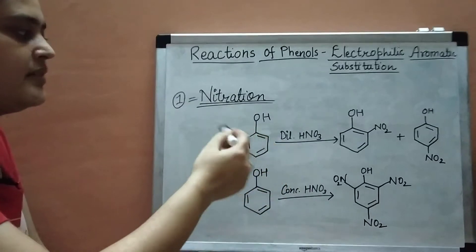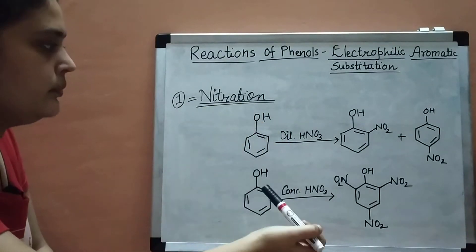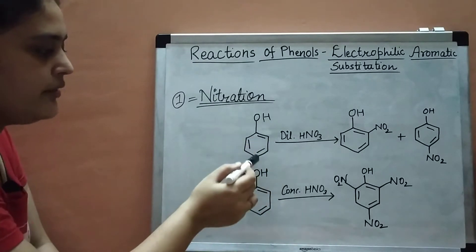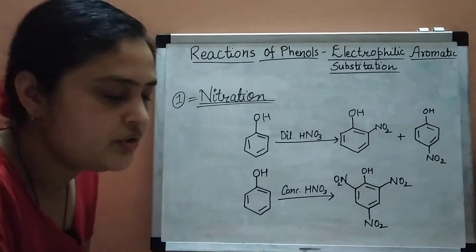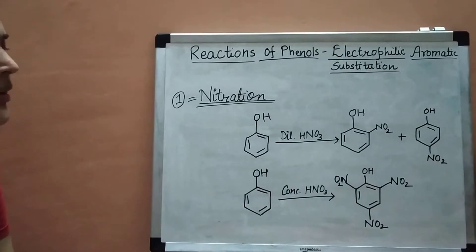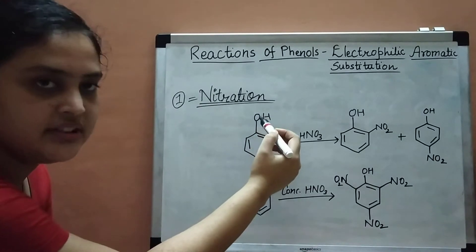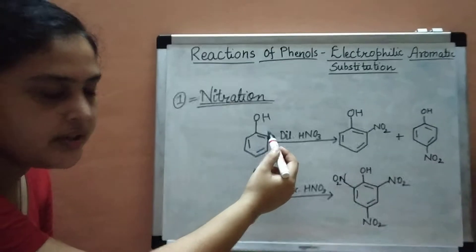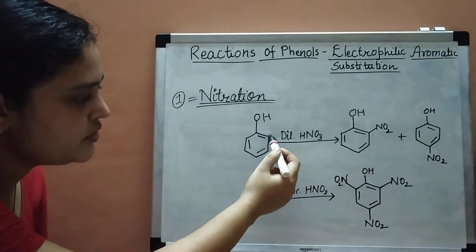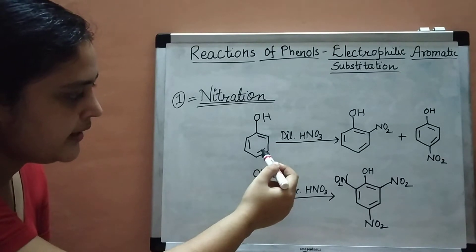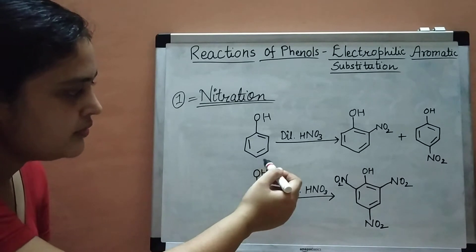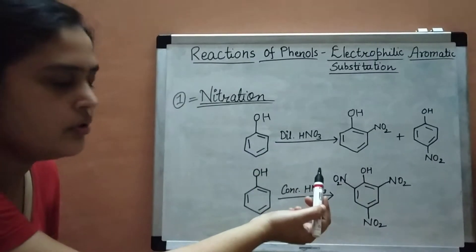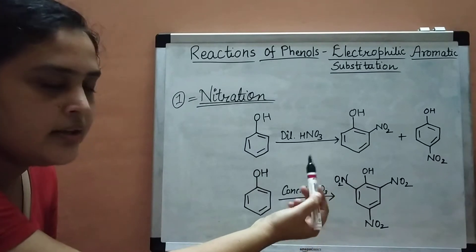The hydroxy group activates the aromatic ring towards the ortho and para positions — that is, positions 2, 4, and 6. It activates because the lone pair of electrons on the oxygen atom shifts into the ring. When it does, a negative charge appears at the ortho position, making it electron-rich. Similarly, the charge shifts to the para position. These are the resonance structures of phenol, showing that ortho and para positions carry negative charge.